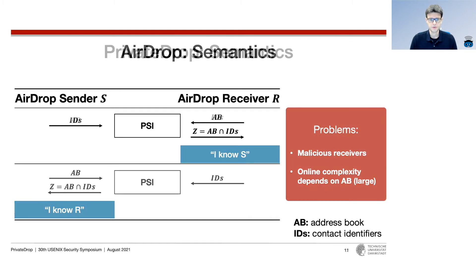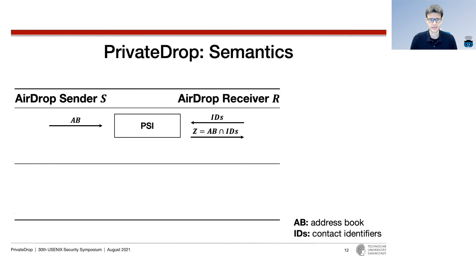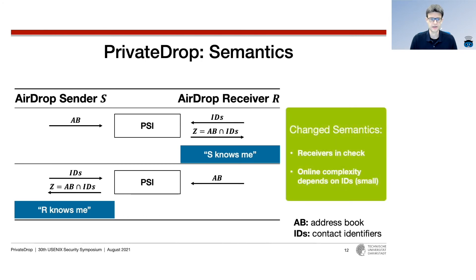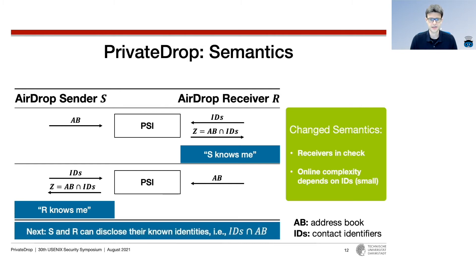We therefore propose to slightly change the semantics by exactly swapping the inputs provided by each party. This way, in the first execution, receivers only learn whether they are known by the sender and then have to prove that they know the sender. This change also has the benefit that the online computation complexity of PSI now mainly depends on the smaller input set, which we assume to be at most of size 10. Once both protocol executions are done, the two parties can safely disclose their identifiers in later steps of the AirDrop protocol, as they are known by the respective other party anyway.